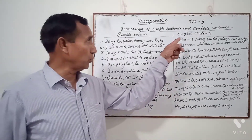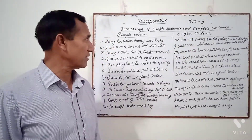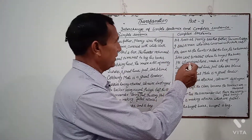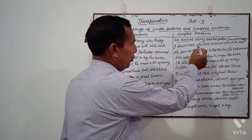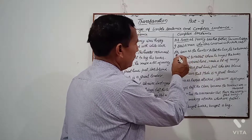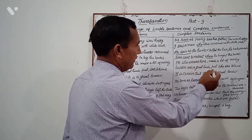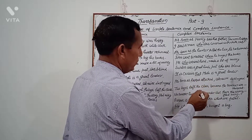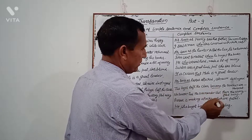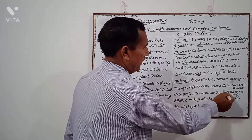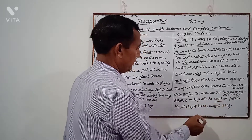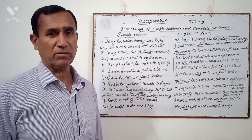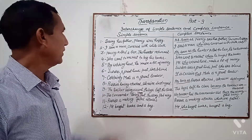To transform into complex sentences, we use subordinating conjunctions. These are the subordinating conjunctions used: "as soon as," "where," "who," "who," "that," "as soon as," "because," "no sooner than," "which," and "who." Thus, we applied subordinating conjunctions to make a complex sentence from a simple sentence.